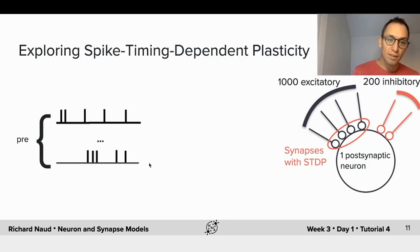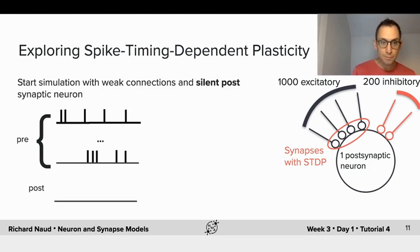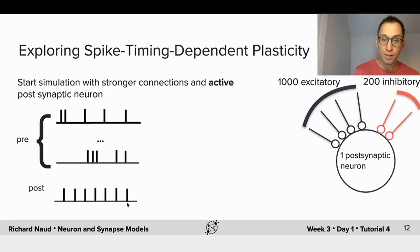So the presynaptic activity will look fairly random, and if we don't choose the synaptic weights here to be strong enough, we won't be able to drive the post-synaptic neuron to fire, and there will be no pairs to speak of, and there will be no plasticity, and the system will just remain silent. So there's no pre- and post-coincidence, no plasticity, and neurons remain silent.